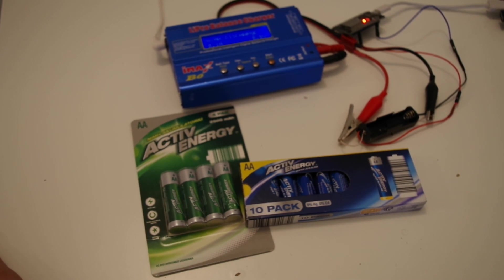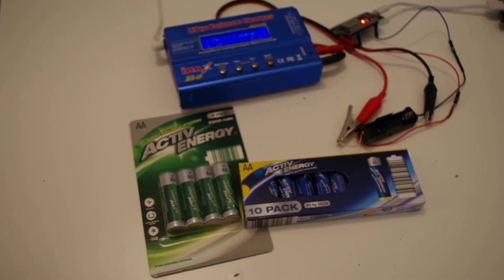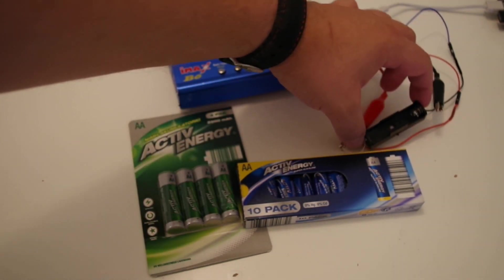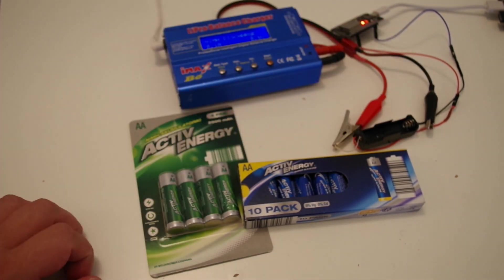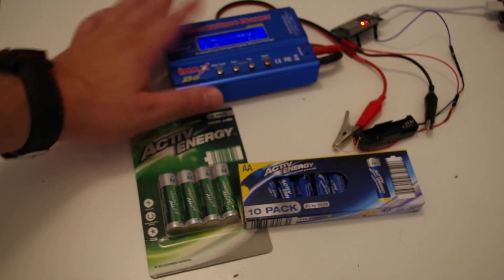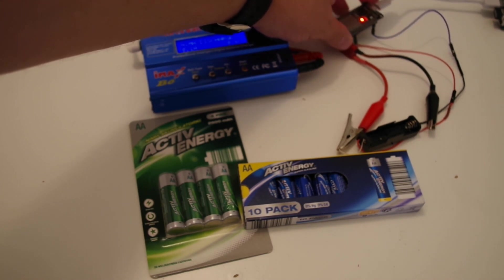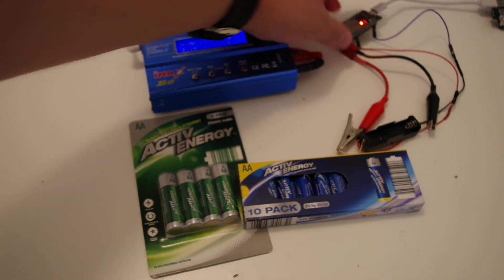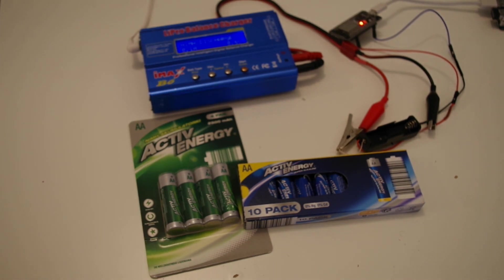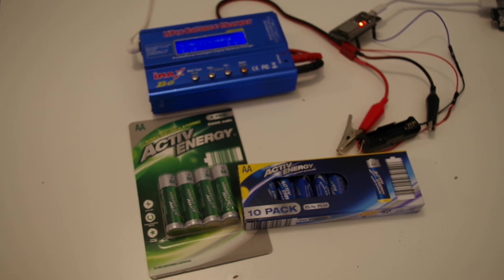For rechargeable ones I will do discharge like they have now off the shelf, then recharge them and do another check. For alkalines the procedure will be the same as before: I will do a check with 0.1, 0.2, and 0.5 amps. At the end of this video I will show you the graphs and we will compare the results.